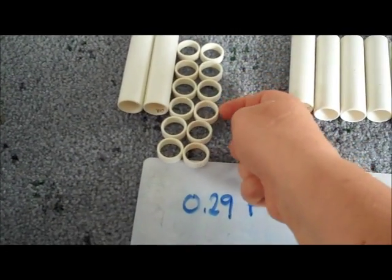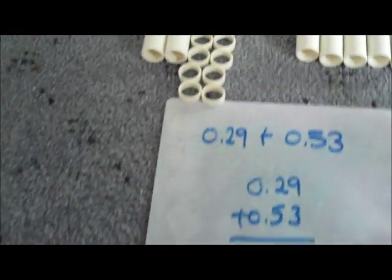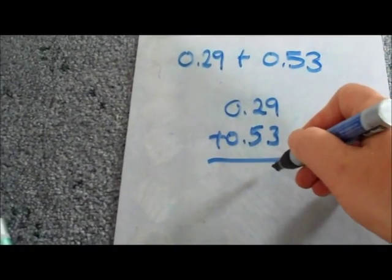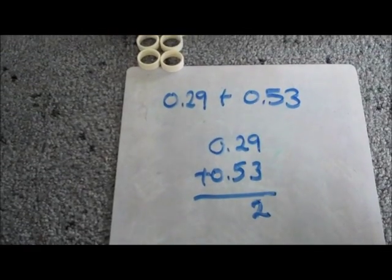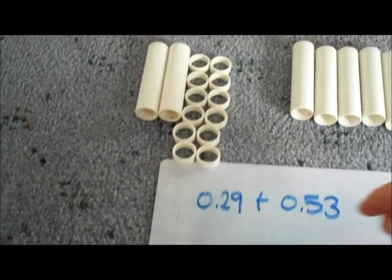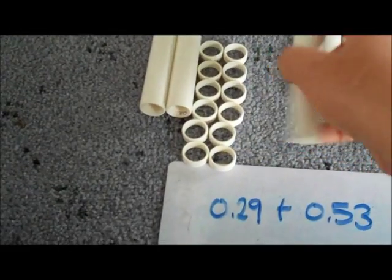So when I add my hundredths together nine hundredths plus three hundredths gives me twelve hundredths. Two, four, six, eight, ten, twelve hundredths. So that gives me twelve hundredths. I can put the two down but I can't put two digits in that one column. So instead ten of those are going to be replaced by one of the tenths.